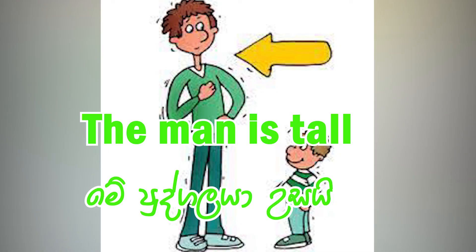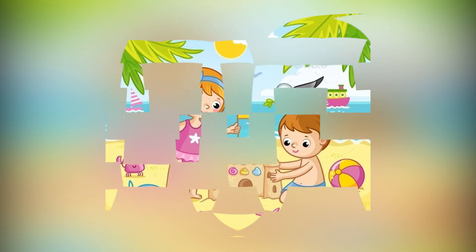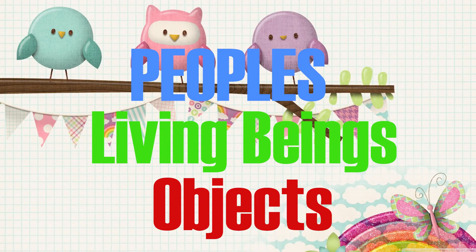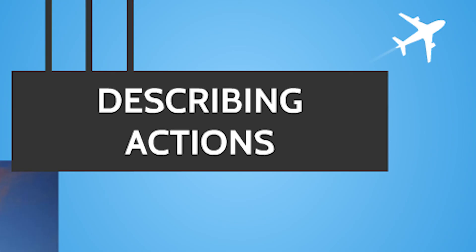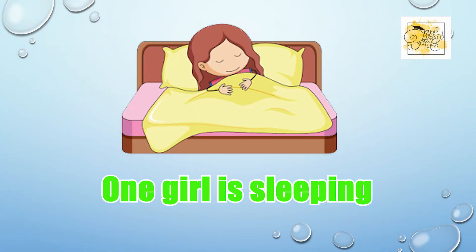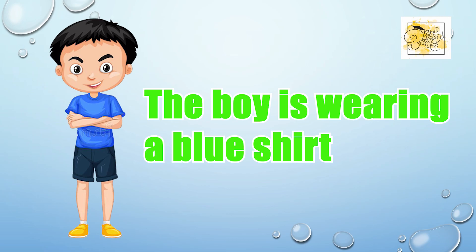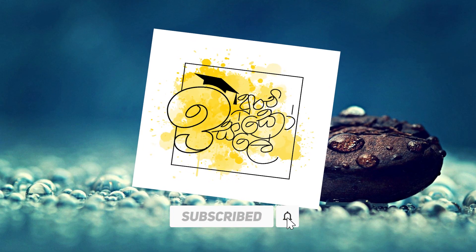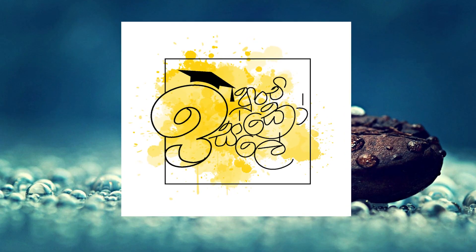So let's use all we have learned to describe a picture. First, the introduction: 'This is a picture of a home garden.' Then describing objects and living beings: 'There are three girls.' Then describing action: 'One girl is sweeping.' Finally, describing using adjectives: 'The boy is wearing a blue shirt.' I hope you enjoyed our lesson today. We will meet again. Subscribe to the Punchi Scholar YouTube channel. Goodbye everyone.